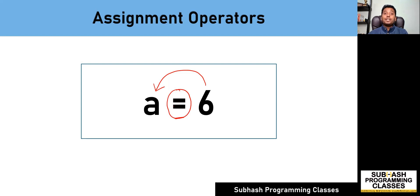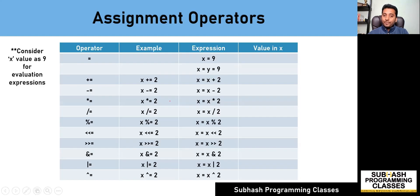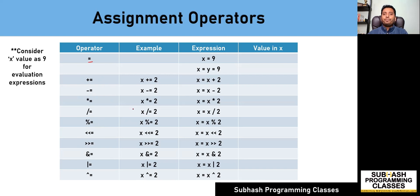So there are several such assignment operators that are supported by C language, and let us learn all of them one by one. As you can see on the screen, among all of these operators, the simplest assignment operator is a simple equal-to. The simple equal-to is used to assign the right-hand side value to its left-hand side variable.